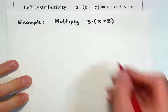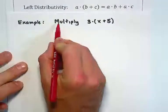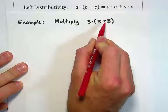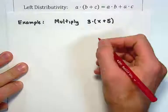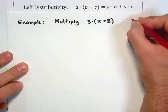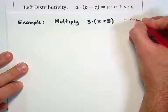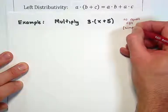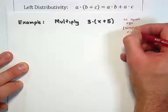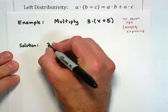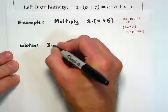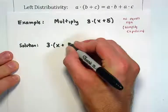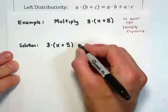First thing we do is read the problem out loud in full. We're going to multiply 3 times x plus 5. Notice there is no equal sign, so immediately we know we're going to simplify the expression. First thing we do as we're solving this problem — aka simplifying — is write the original expression in our own handwriting.